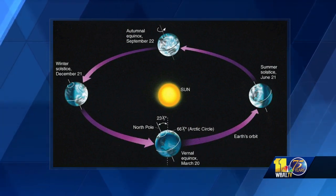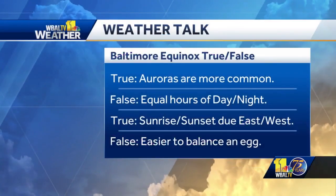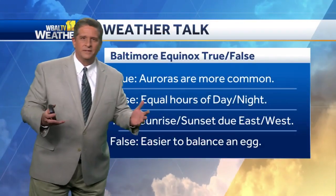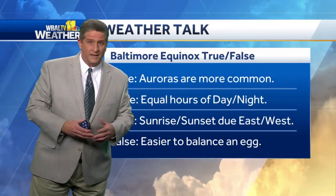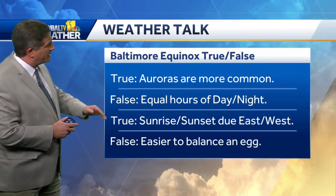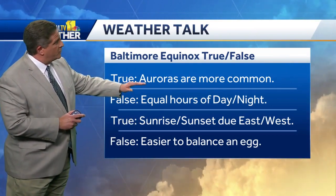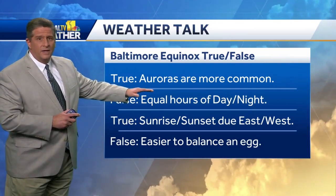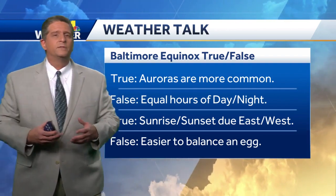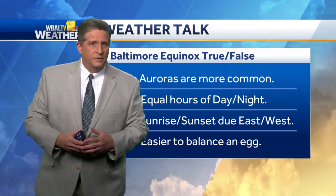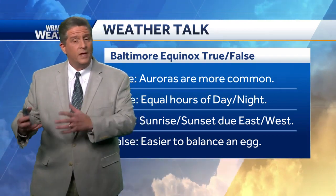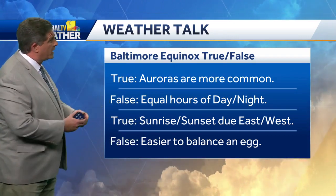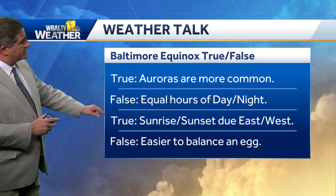Some fun facts and not-facts for the equinox. It is true that the auroras are more common around the equinoxes because of changes in the Earth's magnetic field. So the northern lights are more common during or around the equinoxes.